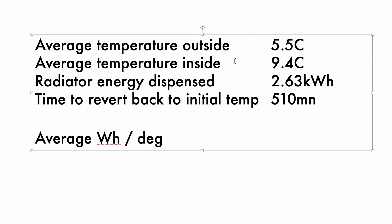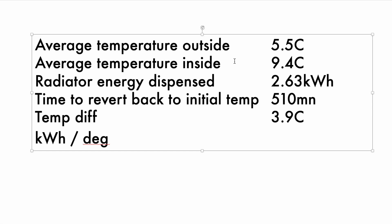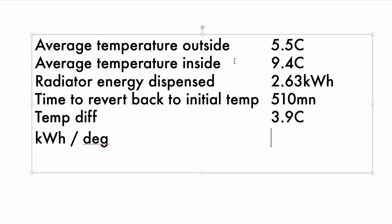The temperature difference is 9.4 minus 5.5 degrees. So, how many kilowatt hours for each degree of difference with the external temperature on average? That's 2.63 divided by 3.9, which equals 0.674 kilowatt hours per degree.